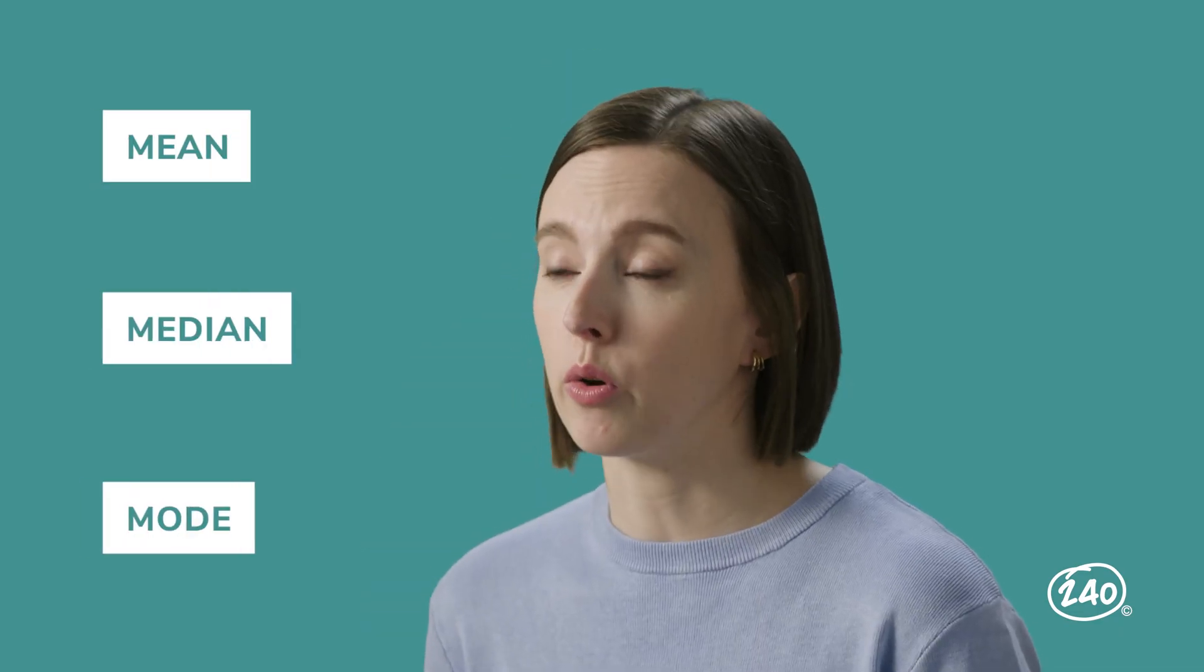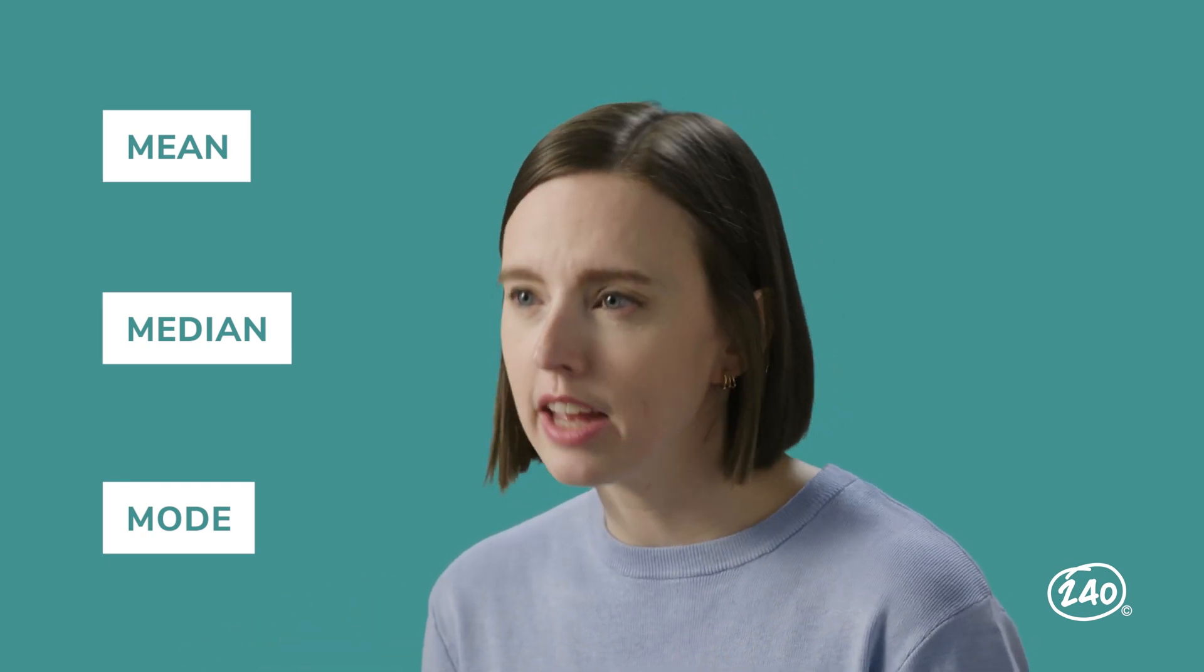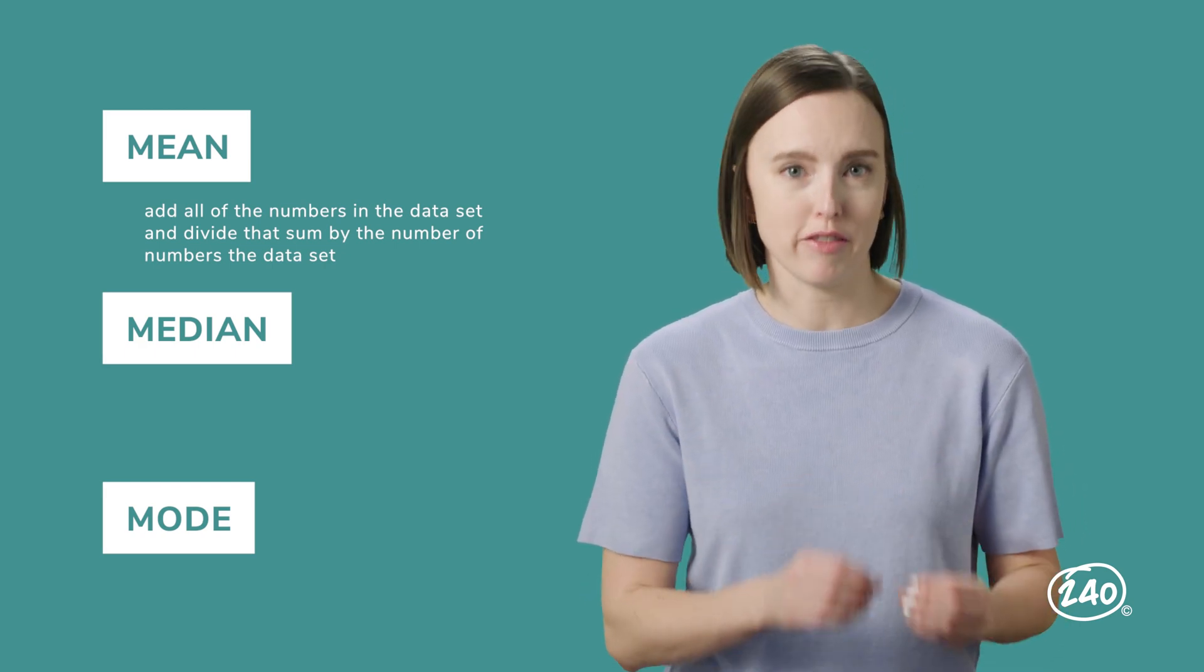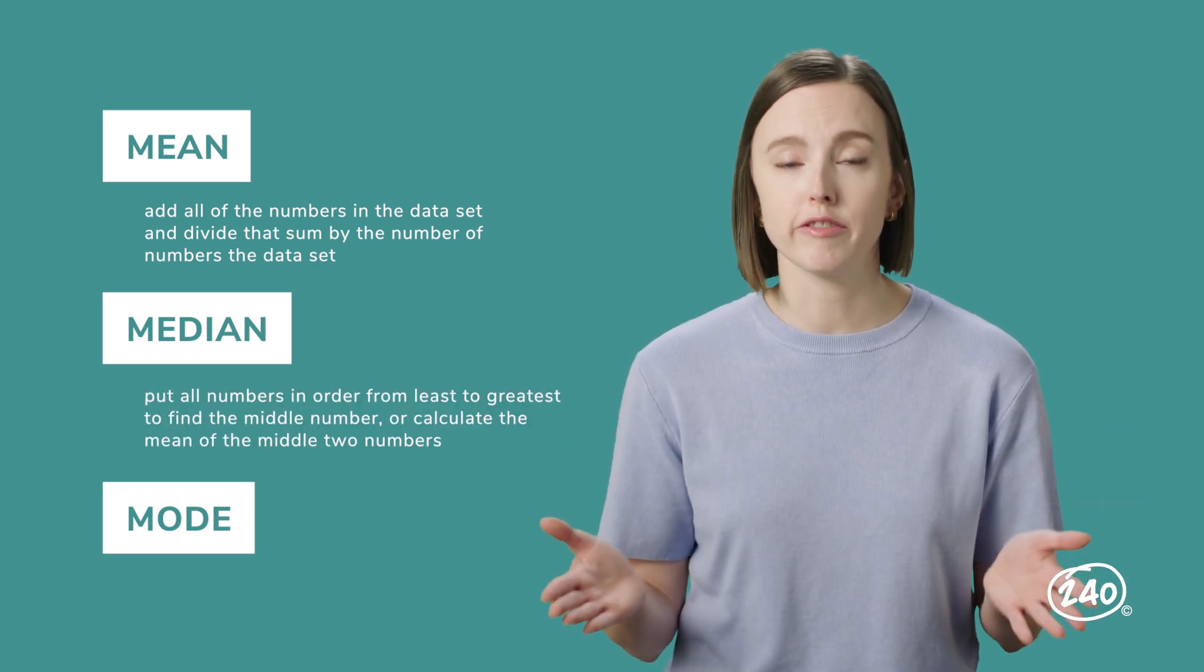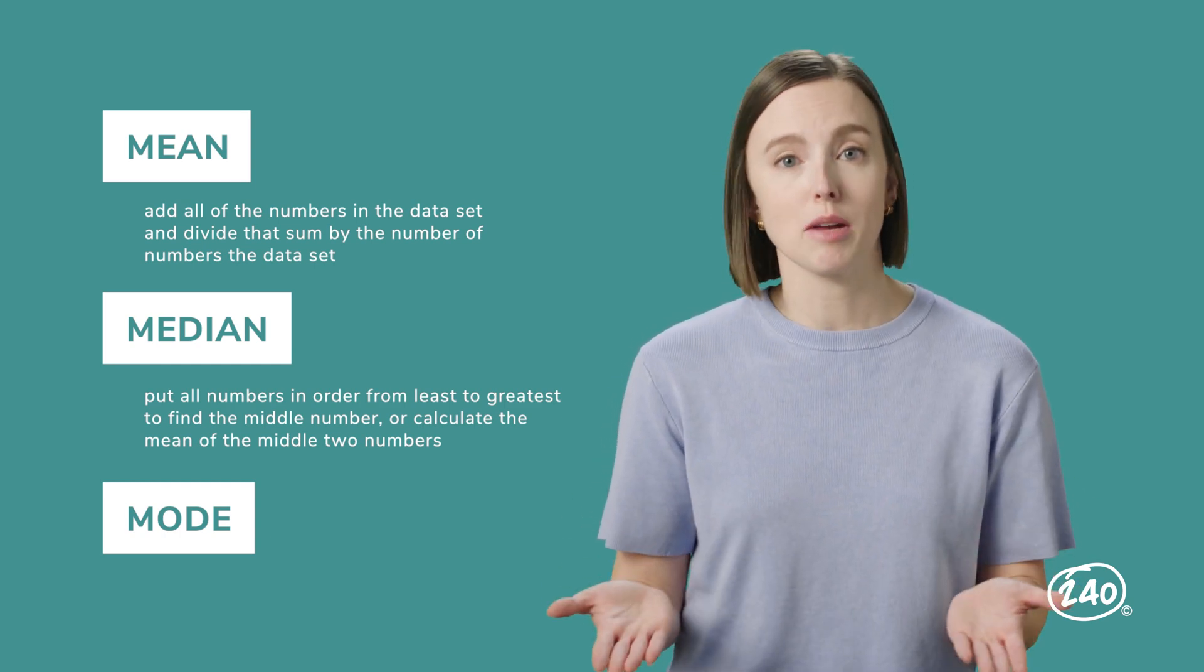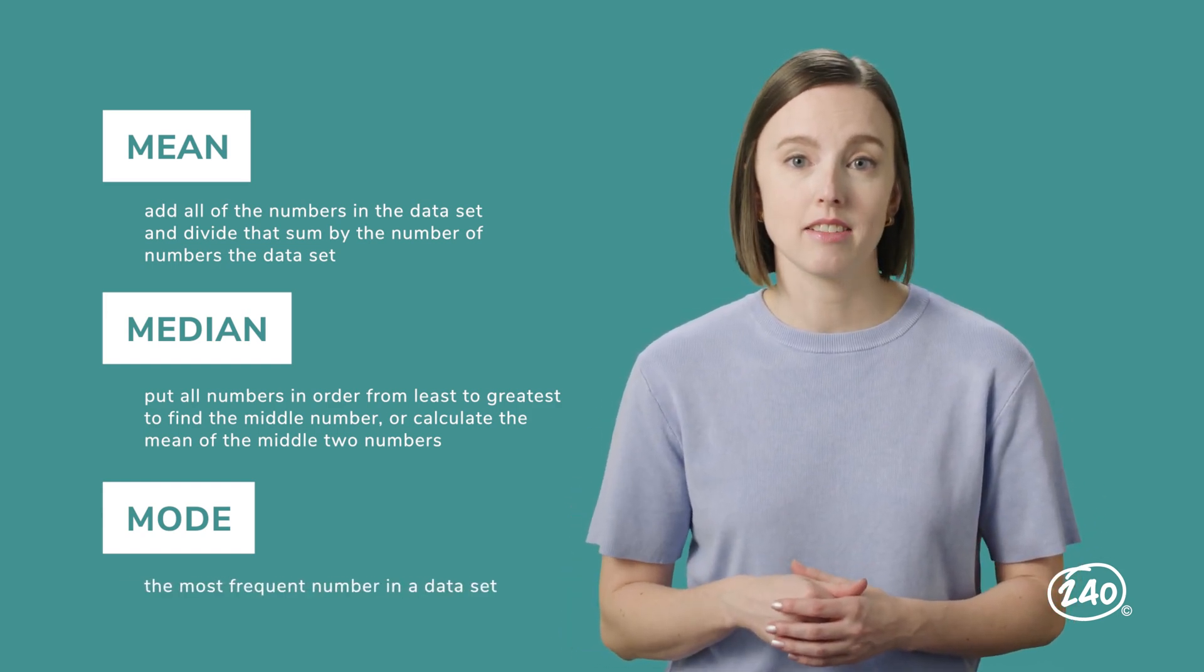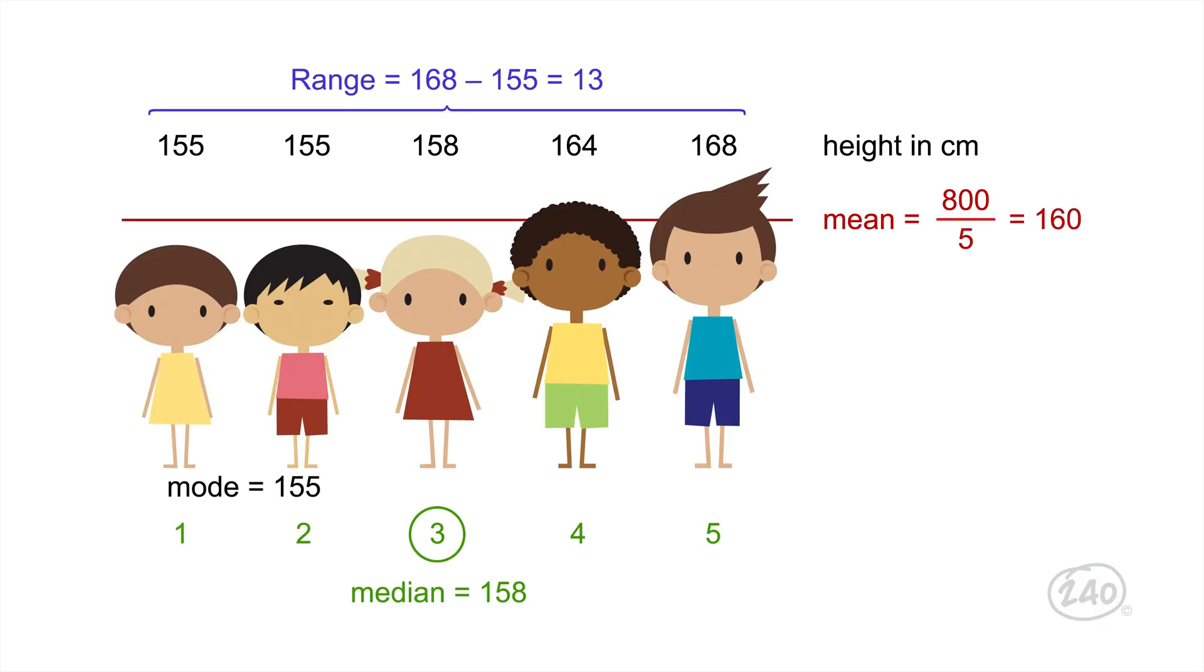Mean, median, and mode are all measures of central tendency. They're different ways of describing the center of the data. The mean is found by adding all of the numbers in a data set and dividing that sum by the number of numbers in the data set. The median is found by first putting all the numbers in order from least to greatest. The median is either the middle number or when there's an even number of values, it's found by calculating the mean of the middle two numbers. The mode is the most frequent number seen in a data set. Some sets of data have no mode and some sets of data have more than one mode.